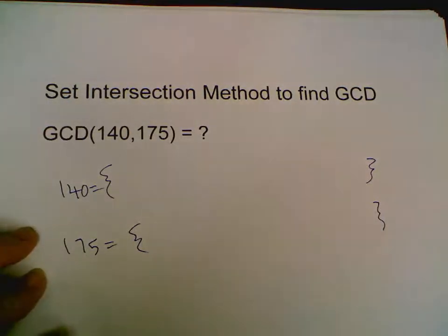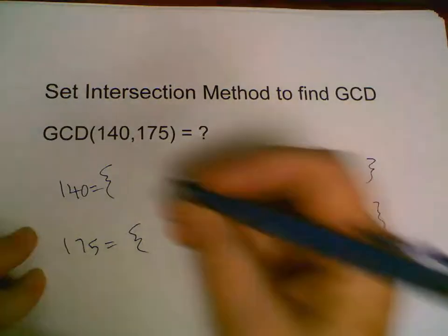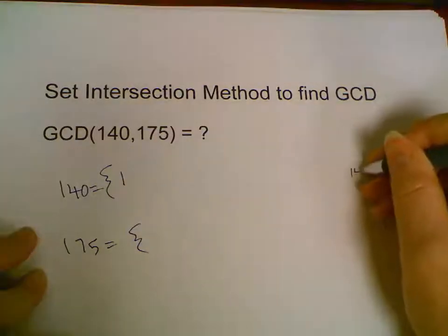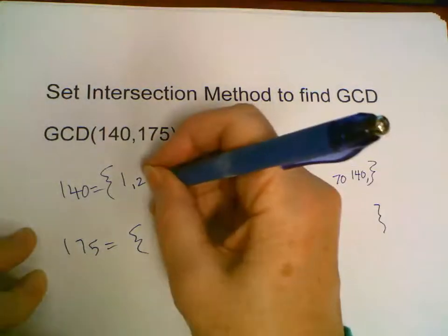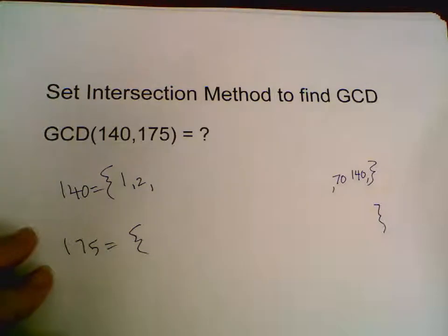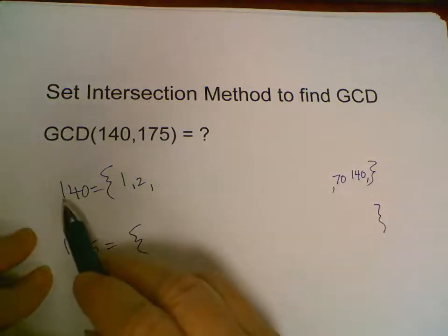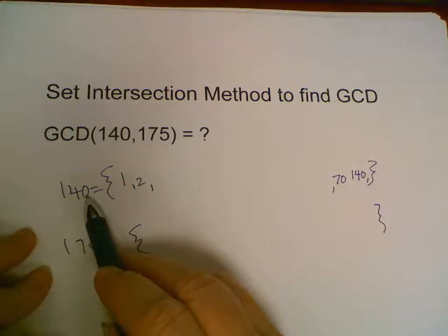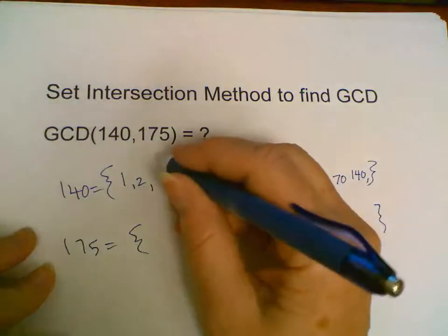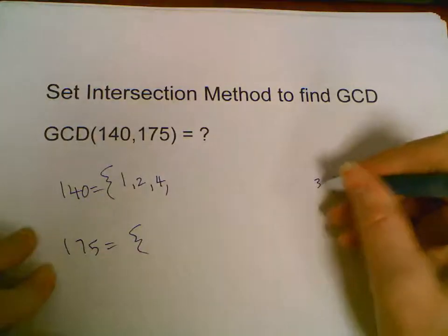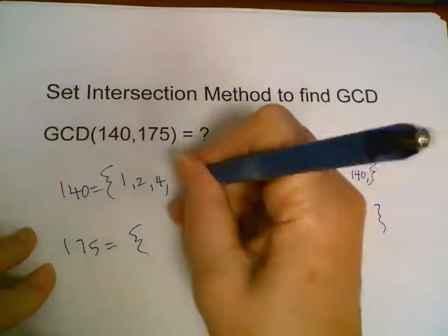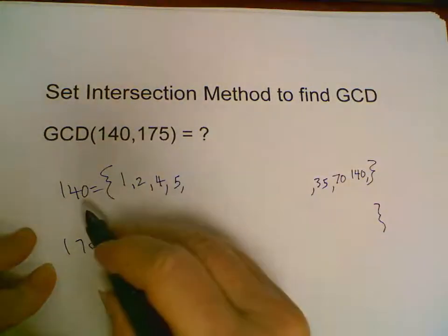140 is 1 times 140, 2 goes into 140 seventy times. Does 3 divide into 140? Here's how you check: 1 plus 4 plus 0 is 5, that's not divisible by 3, so 3 is not a divisor.